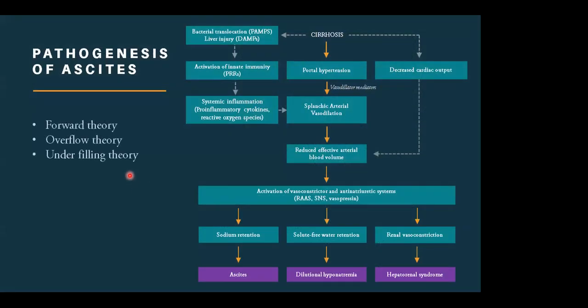In terms of pathogenesis, there are a couple of theories, but the adopted and most recent one is the forward theory. For the forward theory, when a patient has cirrhosis and subsequent portal hypertension, we have vasodilator mediators, mainly nitric oxide, but also other postulated vasodilators including glucagon, prostaglandins, VIPs, and substance P. These vasodilators lead to splanchnic arterial vasodilatation.